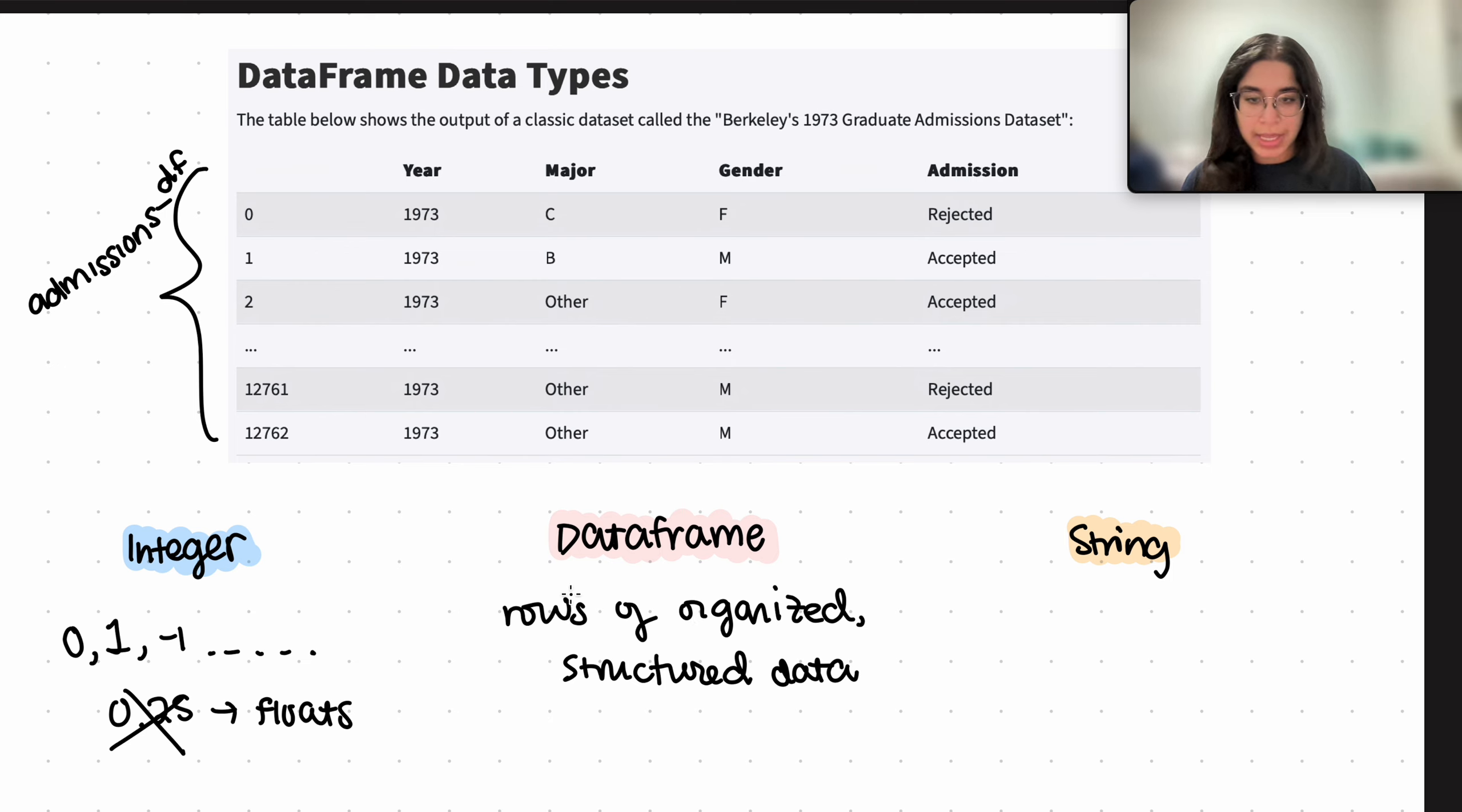So a data frame is compiled of rows and columns. You can have any n number of rows and any m number of columns with different data types in them.